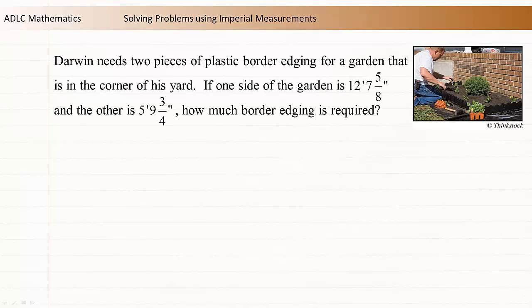Let's look at an example that uses both multiple units and fractions. Darwin needs two pieces of plastic border edging for a garden that is in the corner of his yard. If one side of the garden is 12 feet 7 and 5 eighths inches, and the other is 5 feet 9 and 3 quarters inches, how much border edging is required?